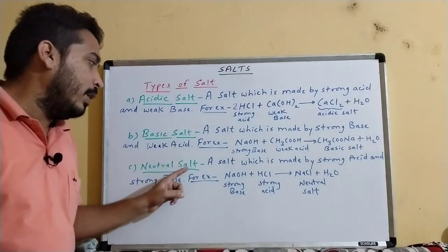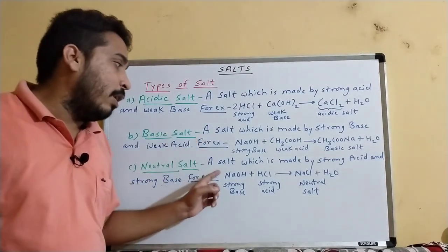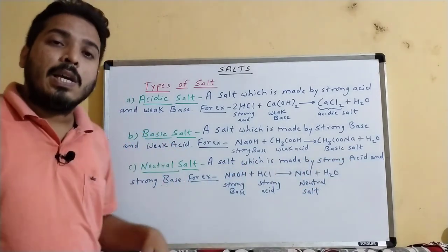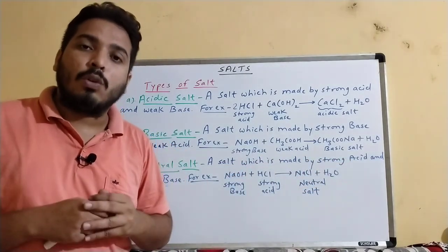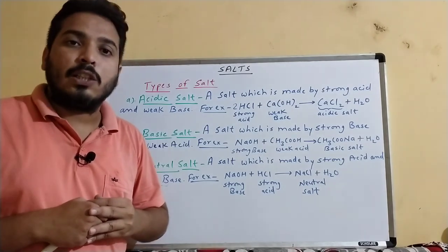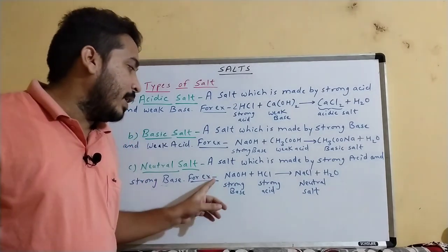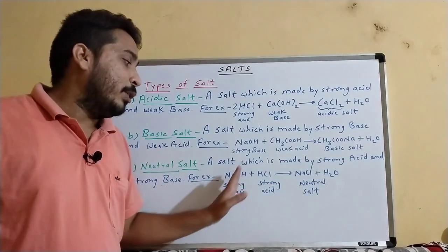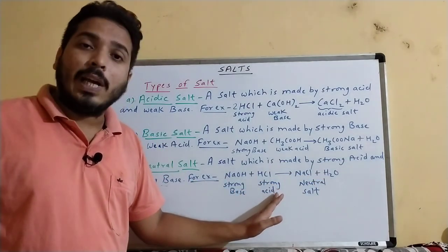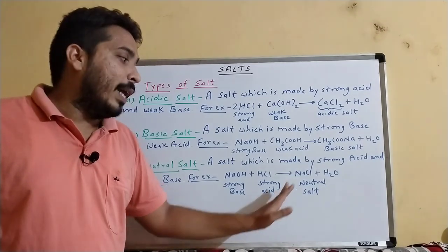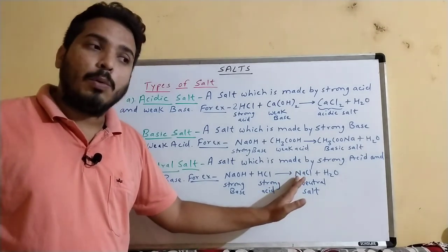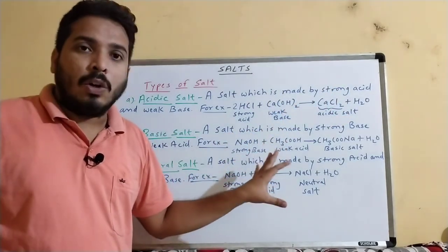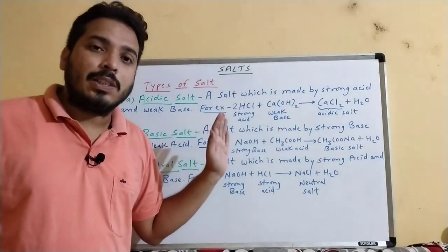The last type is neutral salt — a salt which is made by a strong acid and a strong base. For example, NaOH plus HCl gives NaCl plus H2O. When sodium hydroxide reacts with hydrochloric acid, the neutral salt formed is sodium chloride plus water. These are the three types of salt. You can take a screenshot of this content.